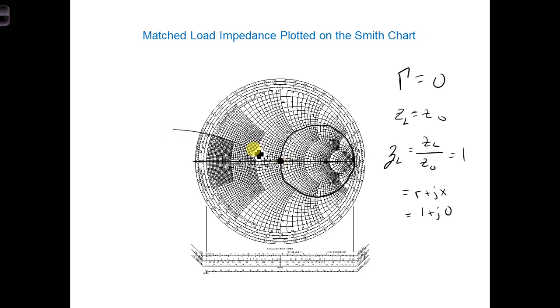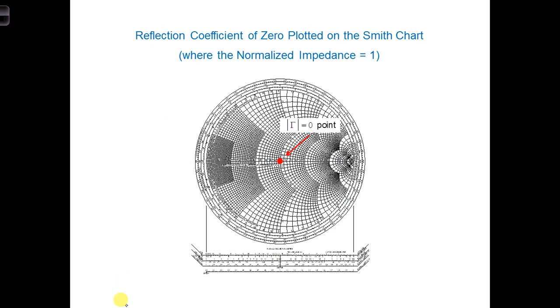So at this point, we have ZL equals 1. So the load impedance dot for a matched load is at the center of the Smith chart.